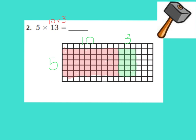We're going to multiply our 5 times our 10 first, and 5 times 10 is 50.